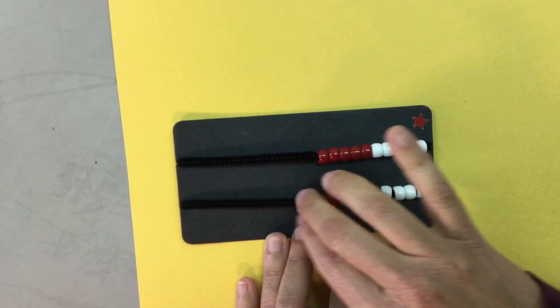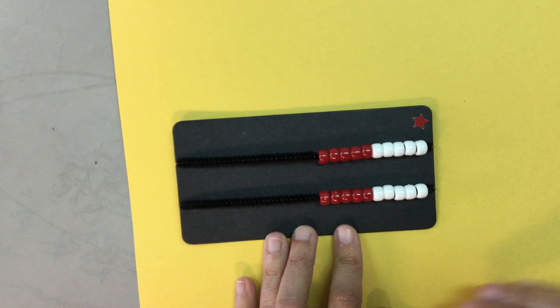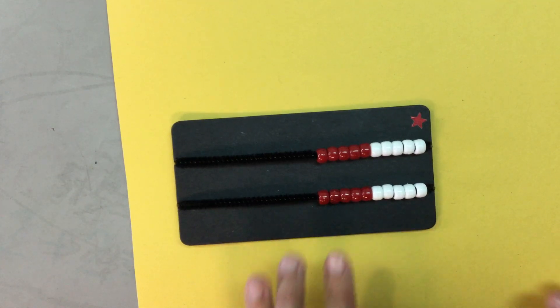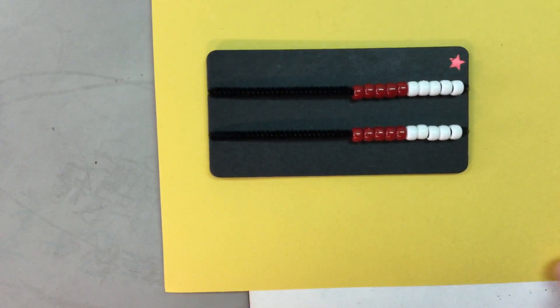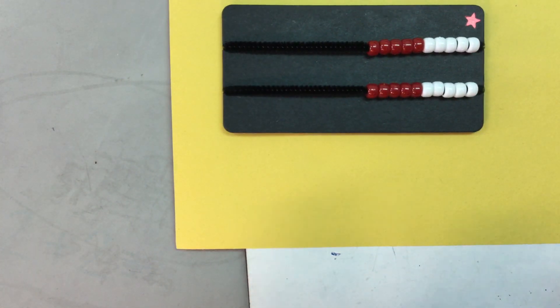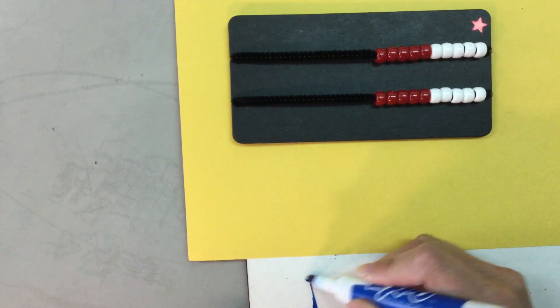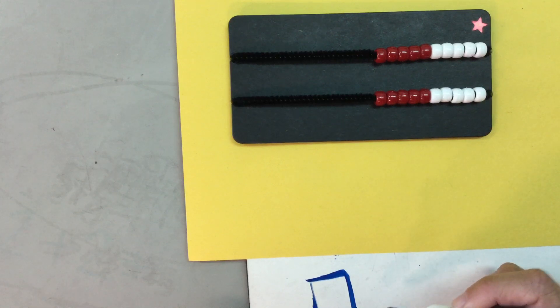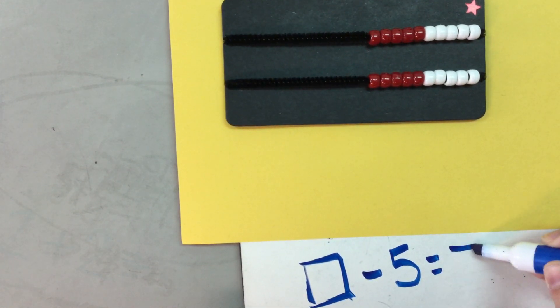The last example that I want to show you using the number rack would be to model with a story problem. So here's my example. I bought some apples for my friends. I gave away five apples and I still had seven left. How many did I start with? So I know when I write an equation for that problem that I don't know how many apples I started with, but I know that I gave five away and I have seven left.